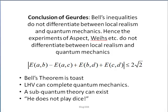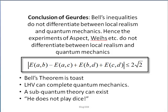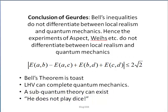Hans Gerd has shown that classical probabilities do the trick. Quantum mechanics for spin-1/2 then satisfies the modified Bell's inequalities, so that Bell's theorem is toast. Local hidden variables can exist and can complete quantum mechanics, so a sub-quantum theory can exist, and Einstein was right — he does not play dice. Hence, you can be sure that Hans Gerd's paper will be scrutinized, because there are lots of people who will not like this result. Unfortunately, like and dislike are subjective comments and of little consequence. People will have to show there are objective errors.